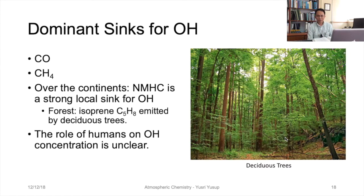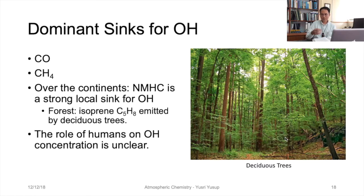Over land masses, non-methane hydrocarbons (NMHC) are a very strong local sink of OH. An example of NMHC emitted by forests is isoprene, or C₅H₈, which is released naturally — mostly by deciduous trees. The role of humans on OH concentration is still unclear, though research is ongoing.